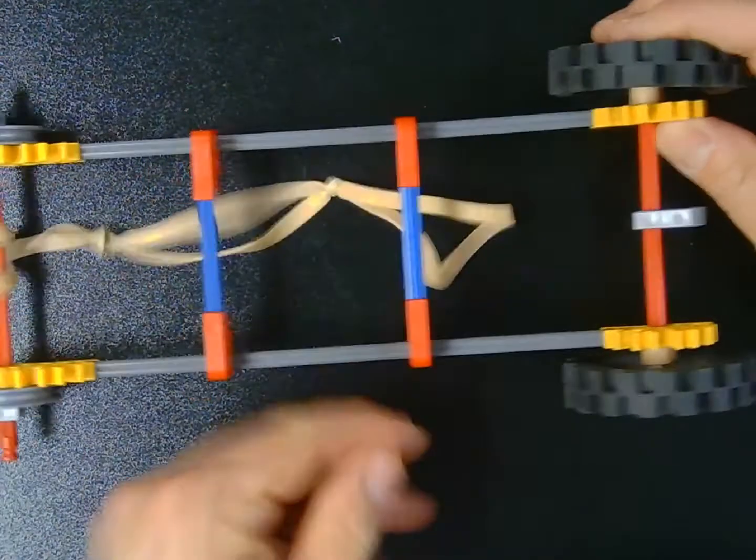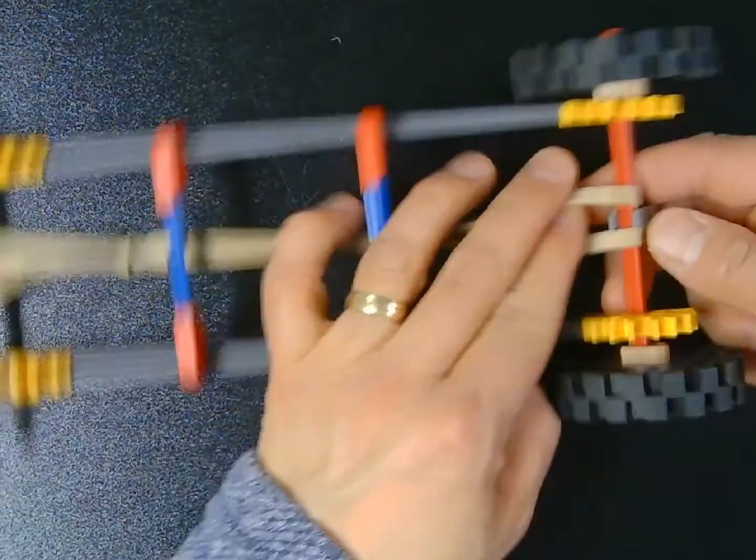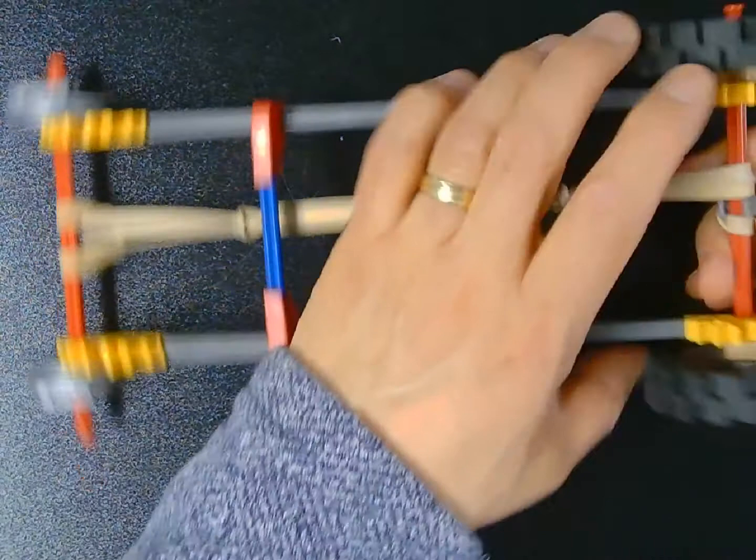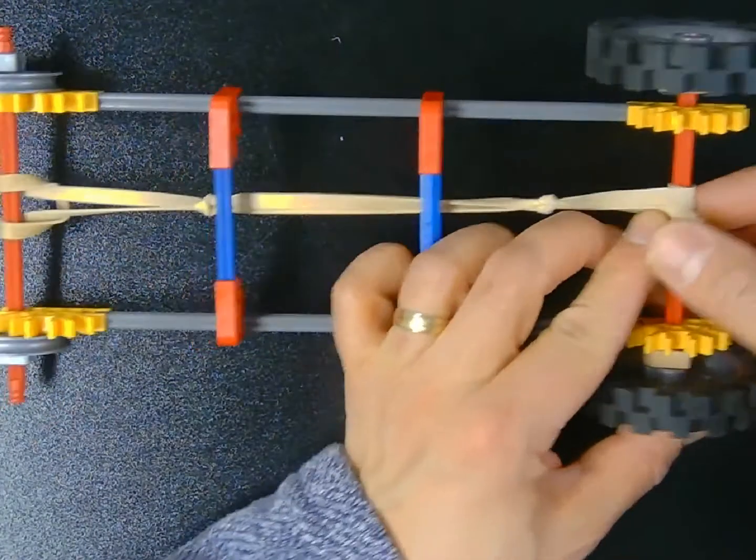So when I wrap my rubber band around the axle using this gray connector to kind of hold it in place, I'm creating what we call potential energy. When I release that potential energy, the car then moves on its own.